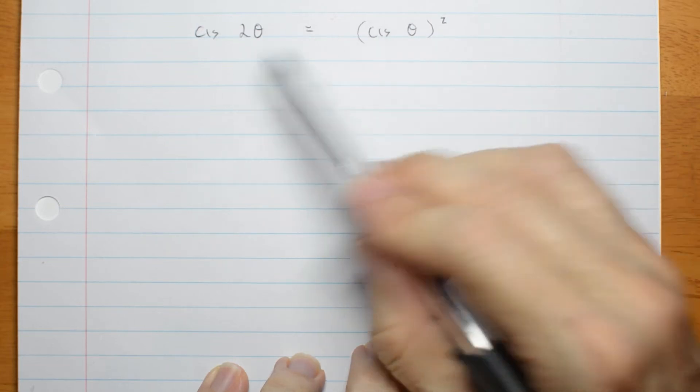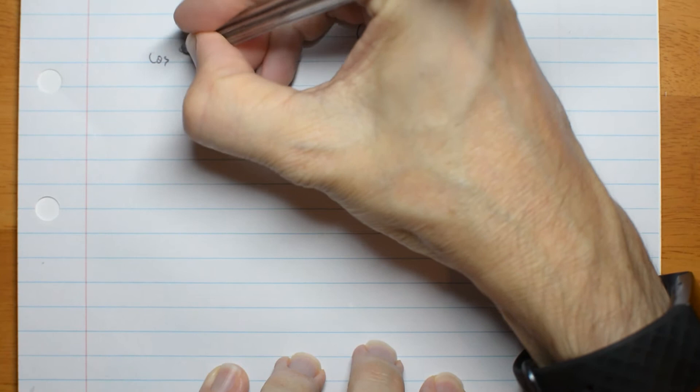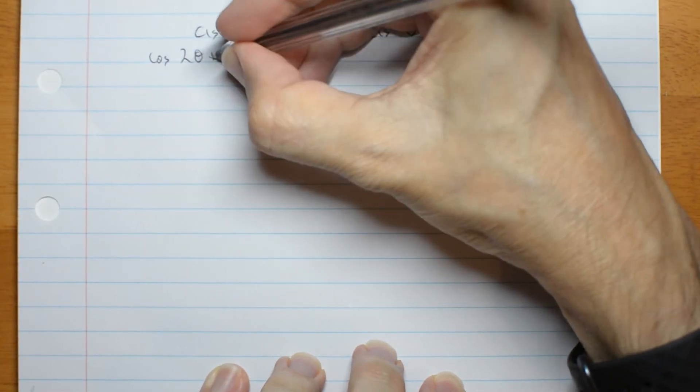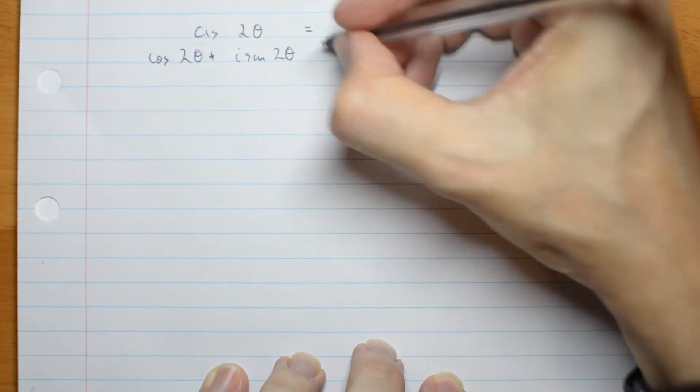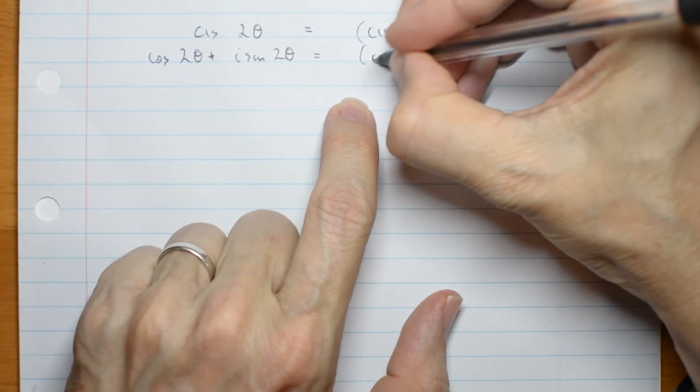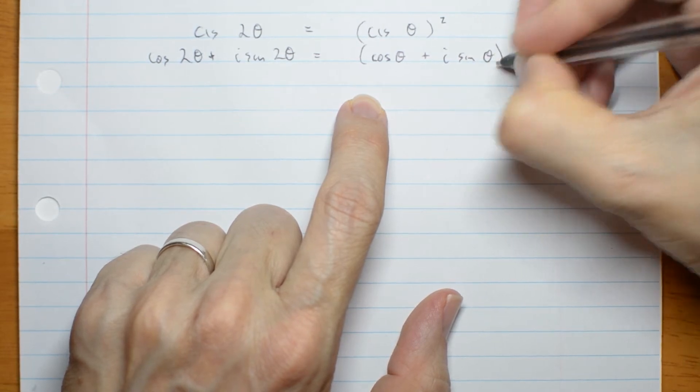But watch what happens when I expand these cisses. This one is cos 2 theta plus i sine 2 theta. And this one is cos theta plus i sine theta squared.